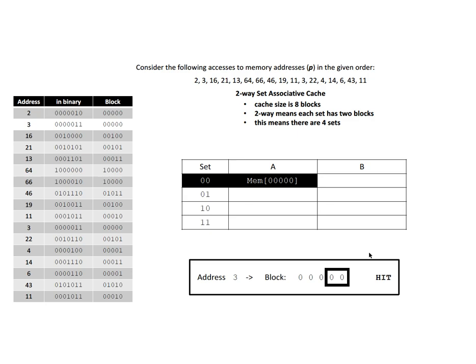The next address is 3, which is in the same block 00000. Looking at the last two bits, we're in set 00, and that block is already in the cache — so this is a hit. Next we access address 16, which is block 00100. We look at the last two bits and see we should move into set 00. Something is already there, but it's not the block we need. Fortunately, there's space, so we add the block without eviction.